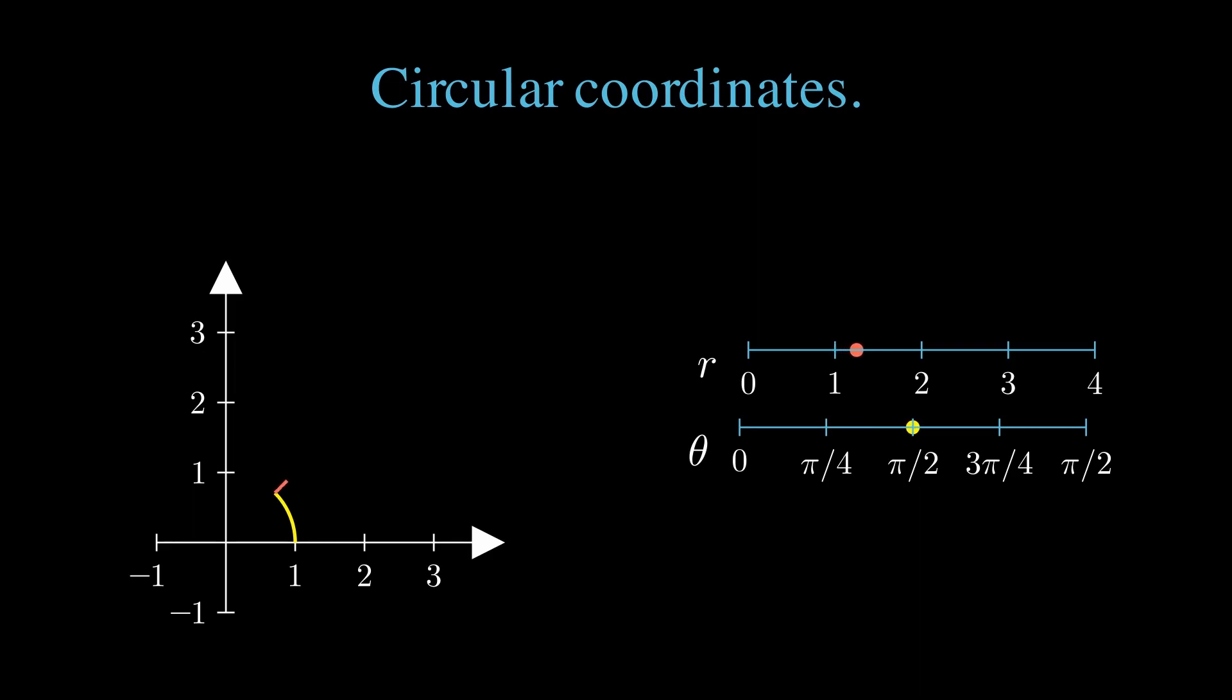Keeping the angle fixed and varying the radius, we trace out lines radiating outward from the origin. Varying both simultaneously allows us to trace out arbitrary paths.